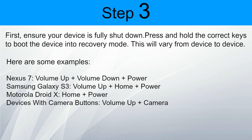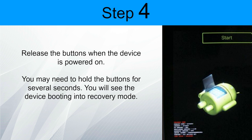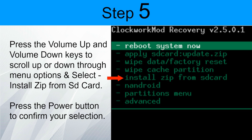Step 3: First ensure your device is fully shut down. Press and hold the correct keys to boot the device into recovery mode — this will vary from device to device. Here are some key combinations: press and hold Power + Home + Volume Down. On most Samsung devices, Power + Home + Volume Up works. You can find your key combination by going to Google and typing your mobile model number and searching for recovery mode keys. Step 4: Release the buttons when the device is powered on; you may need to hold them for several seconds. Step 5: Press Volume Up and Volume Down to scroll through menu options and select 'Install zip from SD card', then press the Power button to confirm.